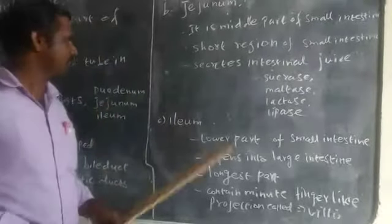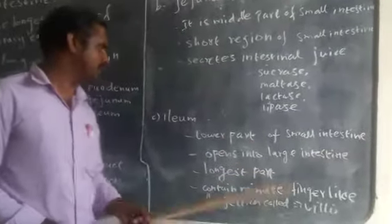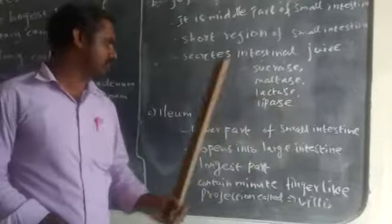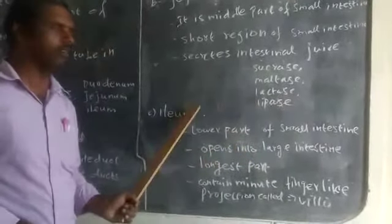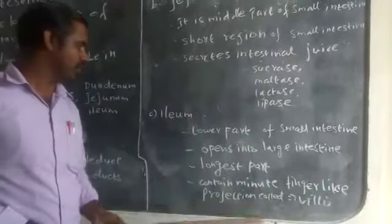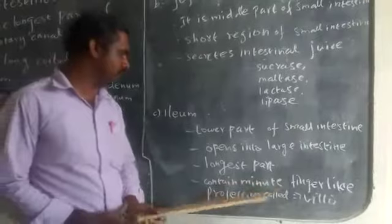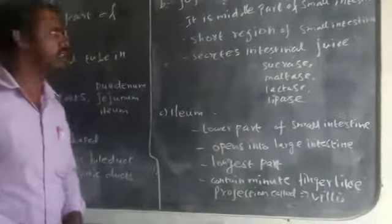Third, ileum. Ileum is the lower part of our small intestine. It opens into the large intestine. It is the longest part of the alimentary canal. It contains many finger-like projections called villi.